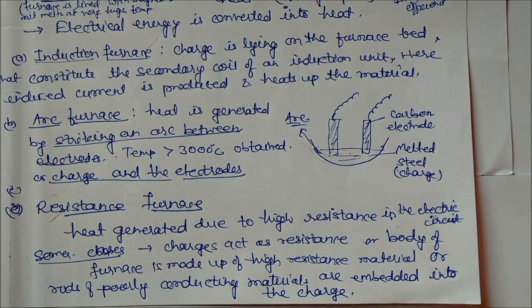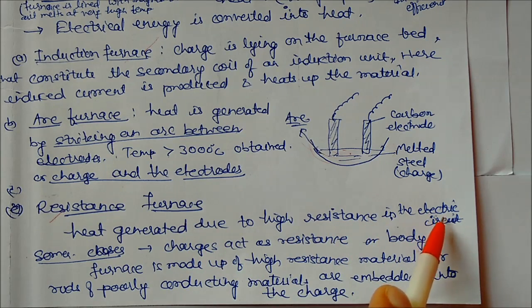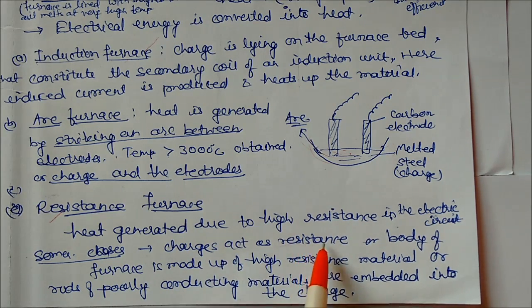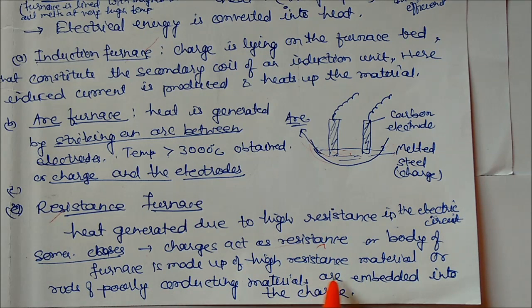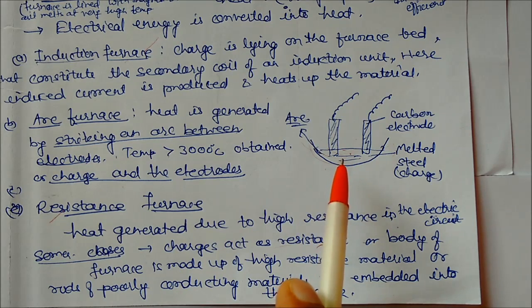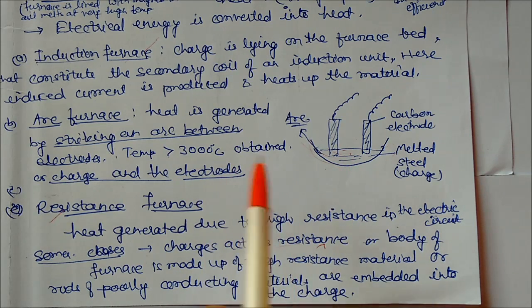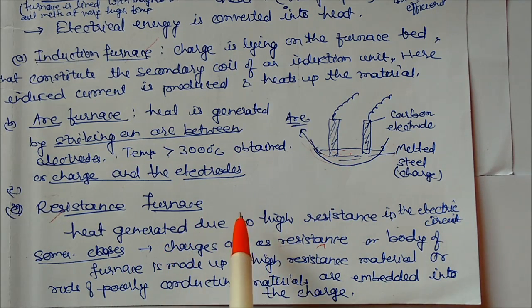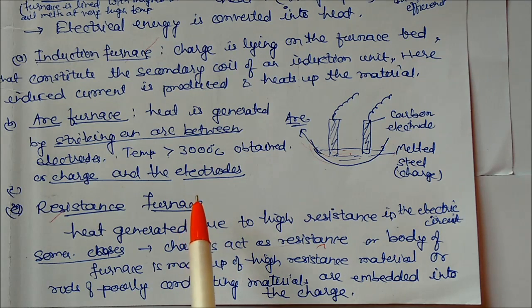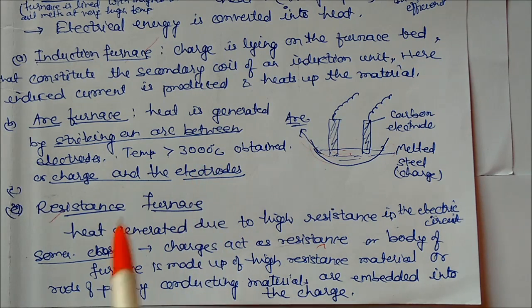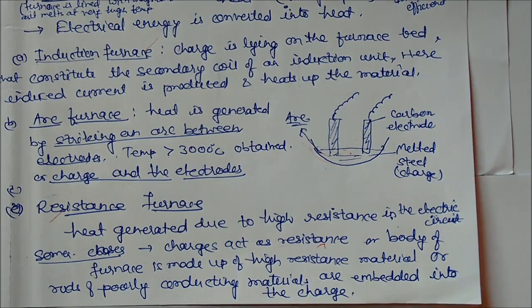Resistance furnace: heat is generated due to high resistance in the electric circuit. In some cases, charge acts as a resistance, or body of furnace is made up of high resistance materials so that rods of poorly conductive materials are embedded into the charge. Heat is generated due to the resistance present in the charge. These are some of the furnaces which are used in the electrical refining of metals.